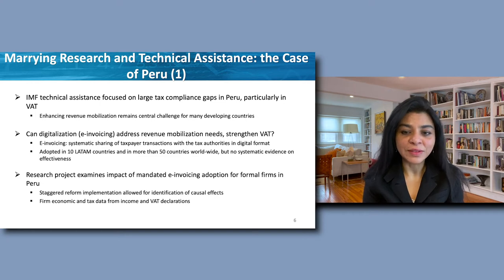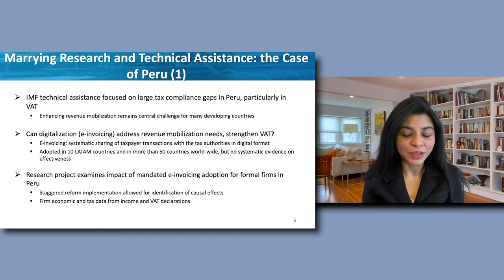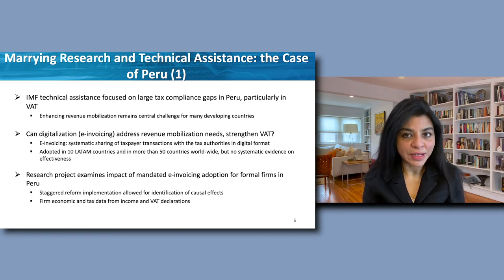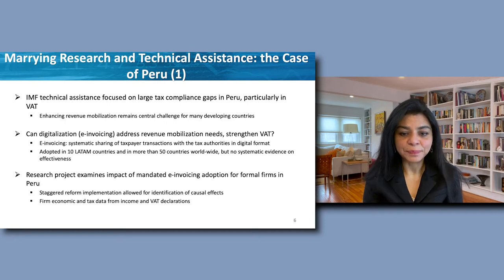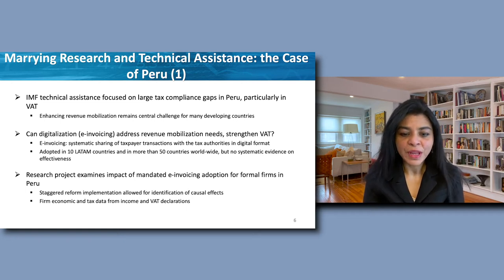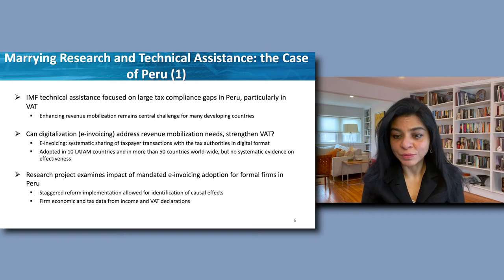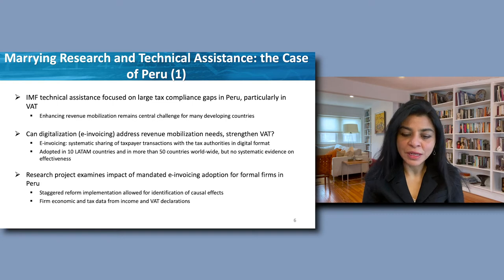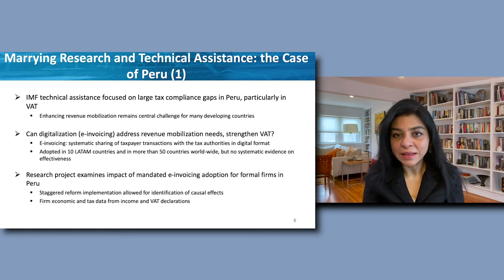Our research was motivated by the findings of the IMF's 2015 technical assistance assessment of revenue gaps in Peru, which highlighted weaknesses in VAT collections and pointed to e-invoicing as a potential tool for increasing revenue collections. VAT compliance is challenging for many developing countries because false or altered invoices can be used to over-claim input tax credits. By digitalizing transactions data, e-invoicing allows for greater oversight by tax authorities, increasing the probability of evasion detection and encouraging greater voluntary compliance.